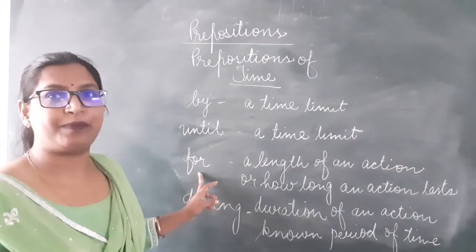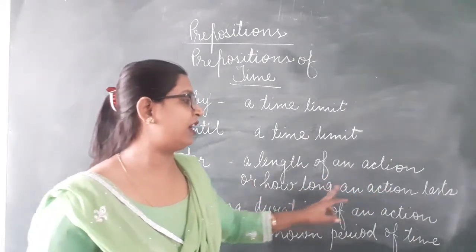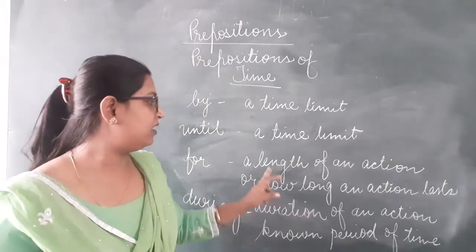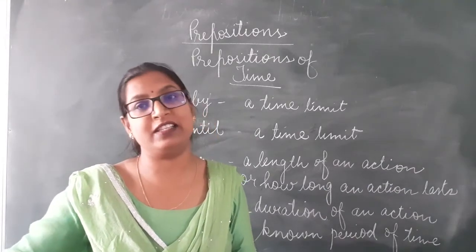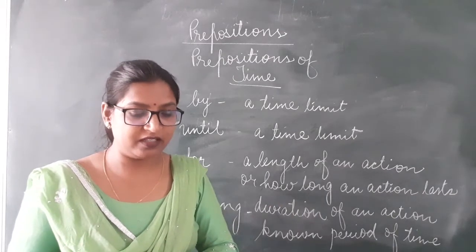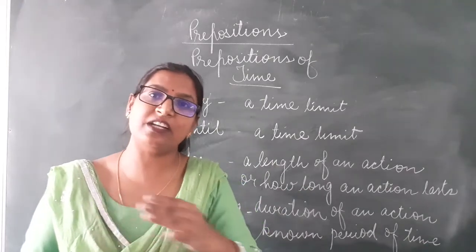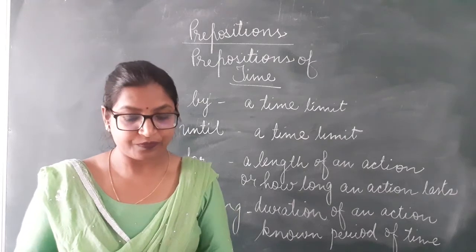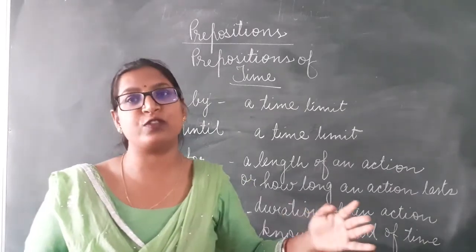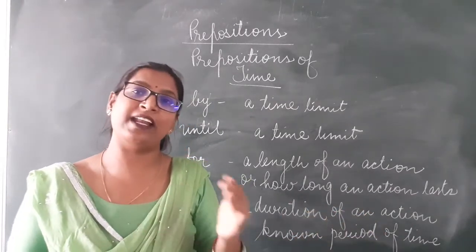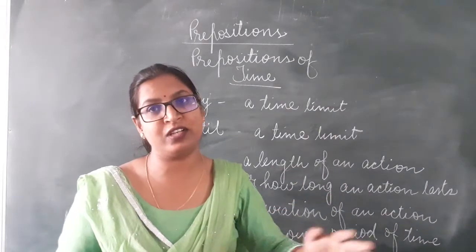The next preposition of time is 'for'. It indicates the length of an action — how long an action lasts. For example, I slept for 2 hours in the afternoon — the action of sleeping continued for 2 hours. Rita walks for 3 hours in the morning — the action of walking continues for some time. So 'for' expresses the length of an action.